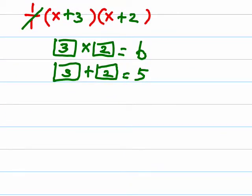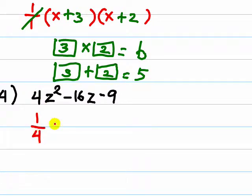One more example. Here we have 4z squared minus 16z minus 9. Look at this coefficient, put the reciprocal of that, make parentheses, put 4z everywhere.